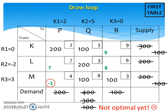To draw the loop, first put a plus sign at this square, then move to the right to this square and put a minus sign. Now, from here, move up to this square, make a stop and put a plus sign. Then move to the left to this square, make a stop and put a minus sign. Finally, go back to the original square, and we have a loop.